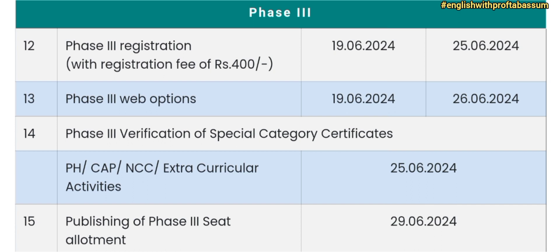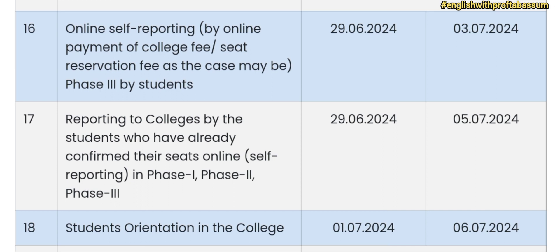If you don't get a seat in phase 1 and 2, or you don't like the college, only then you should opt for phase 3. Phase 3 registration amount is Rs. 400, and that will happen from 19th June to 25th June. Phase 3 web options start from 19th June to 26th June. Verification of special category certificates will happen on 25th June. Phase 3 seat allotment will be on 29th June 2024, and online payment and self-reporting will be from 29th June 2024 to 3rd July 2024.